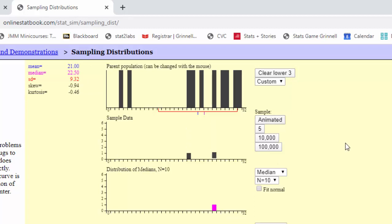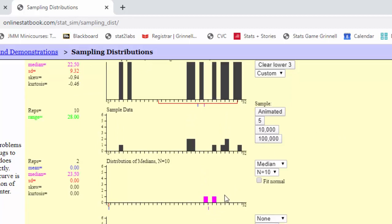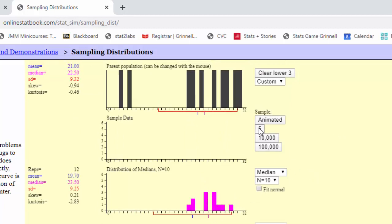Let's do it again. Sample 10 observations. And then calculate the new median. Again, we can repeat this over and over again. Let's do it 100,000 times. And what do we see?